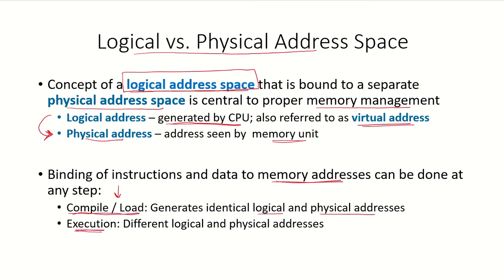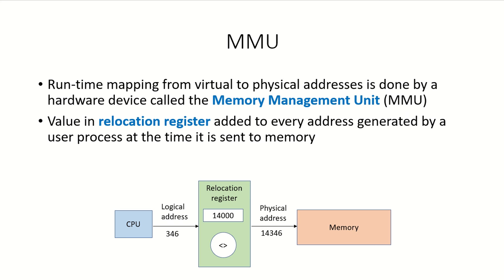But if binding is done at execution time — when the program is actually being executed — this results in different logical and physical addresses. This runtime mapping from virtual to physical addresses is done by a hardware device called the Memory Management Unit, or MMU. Inside the MMU, among its other functions, there is a relocation register, and its value will be added to every address generated by a user process.